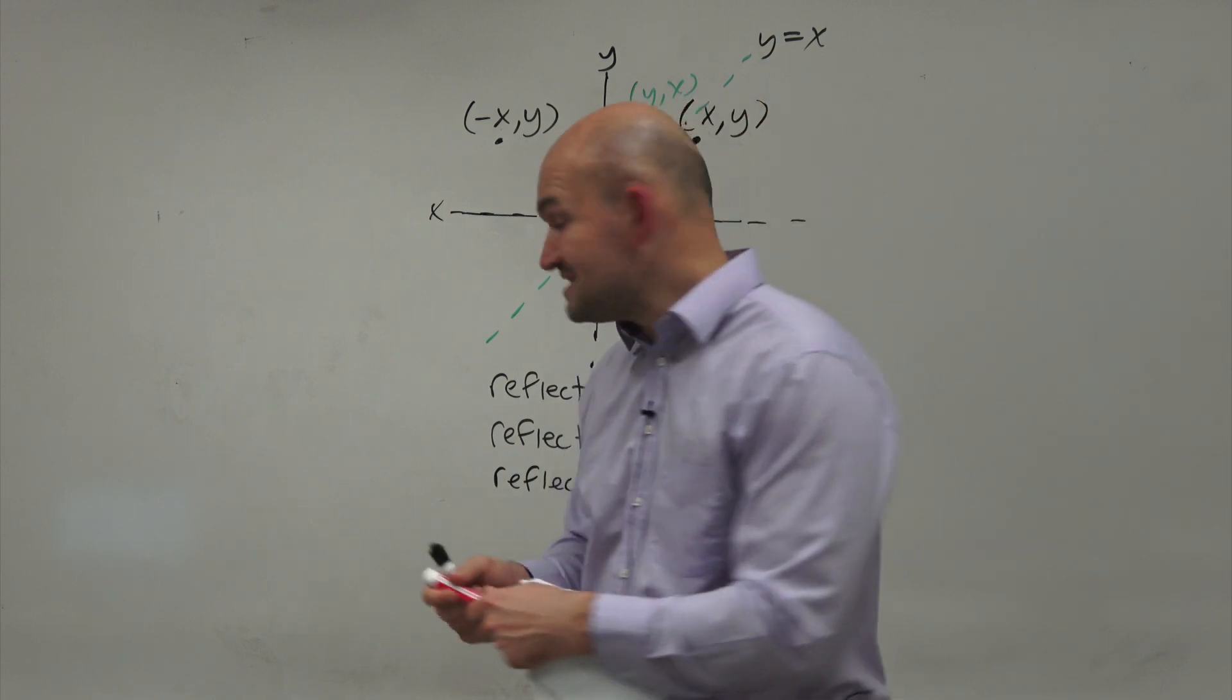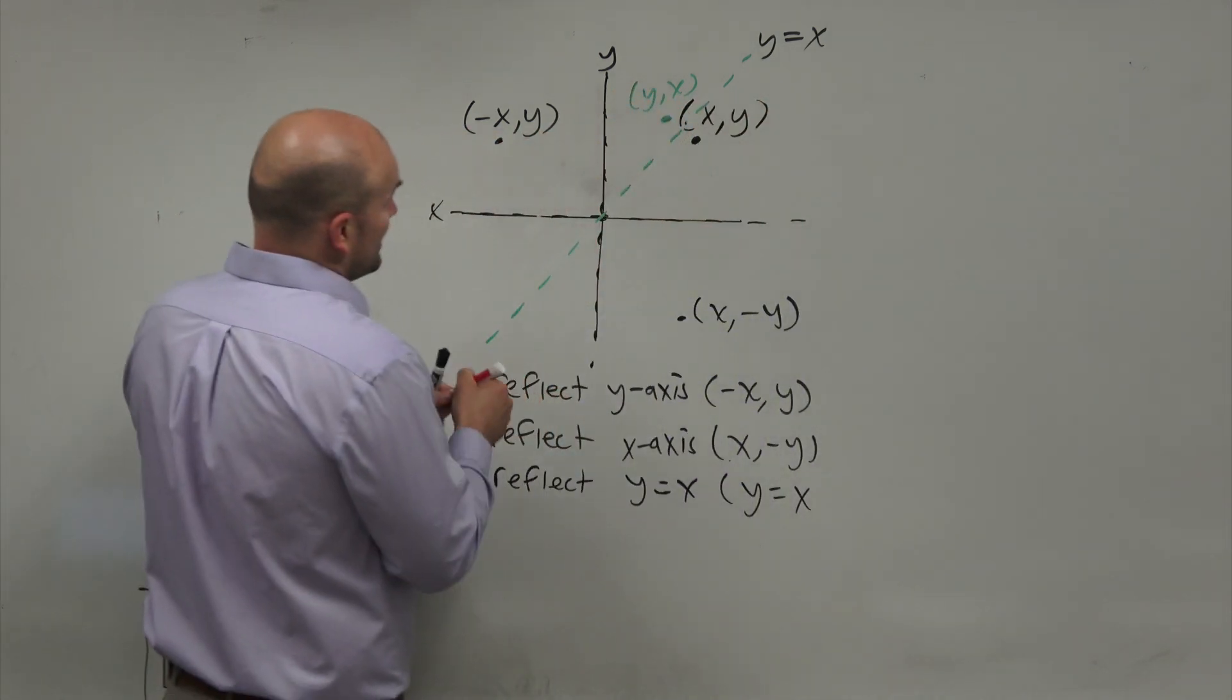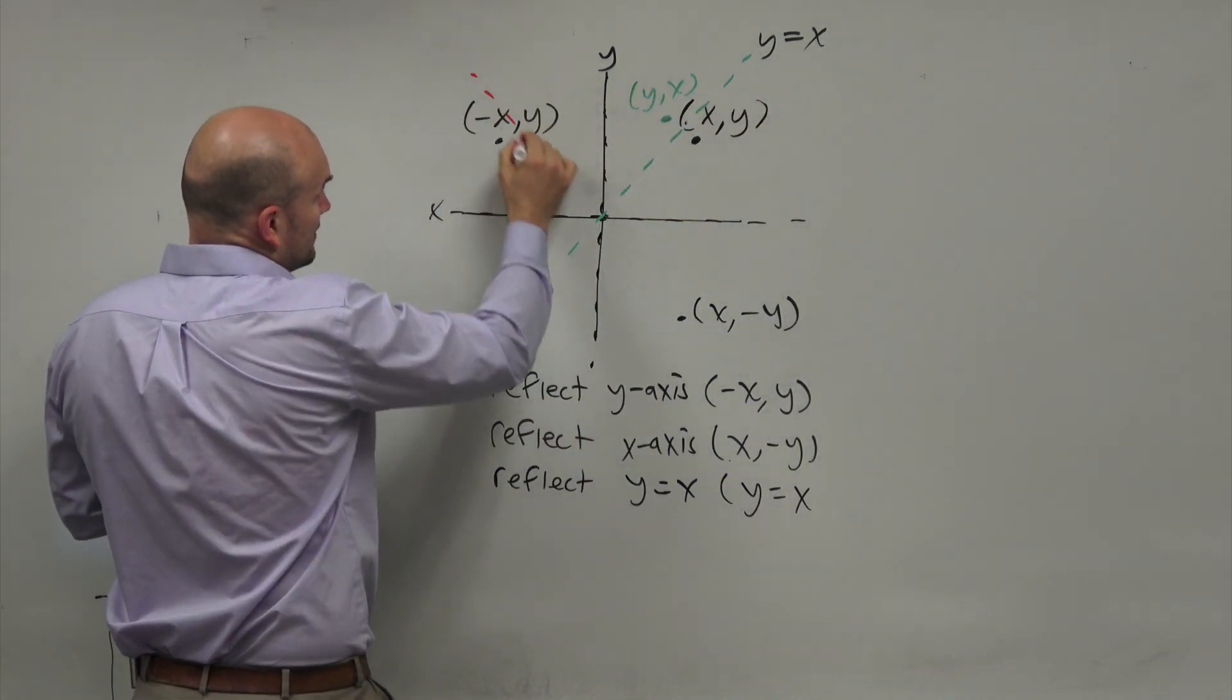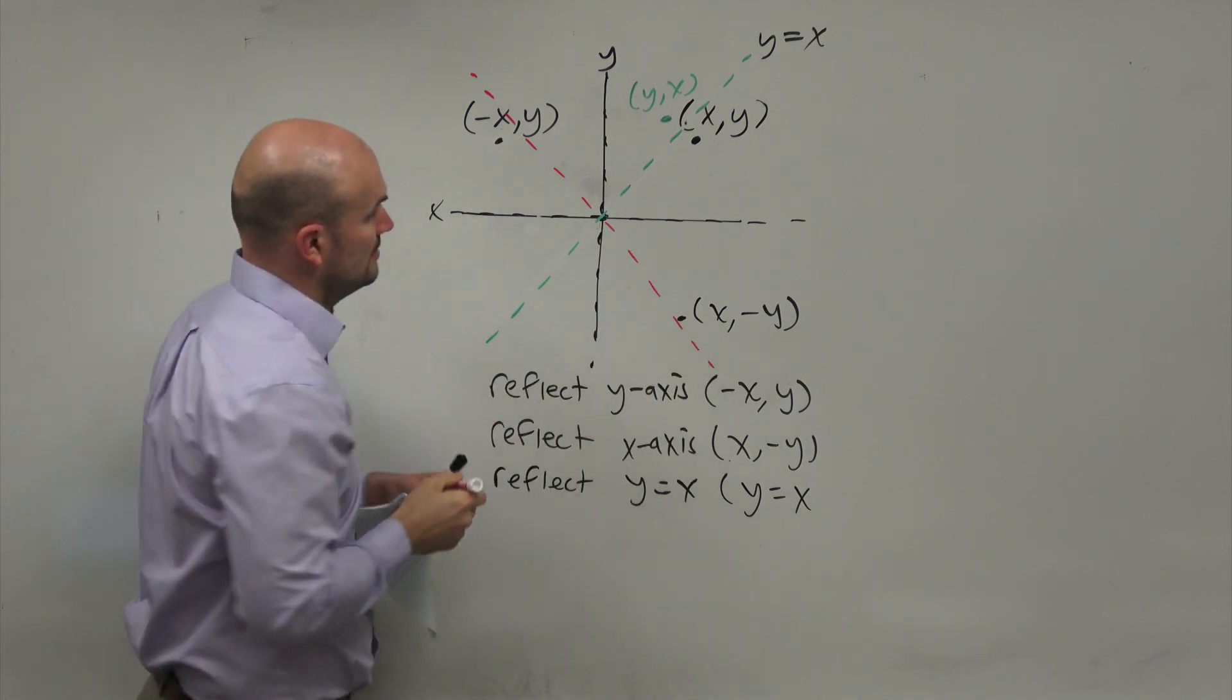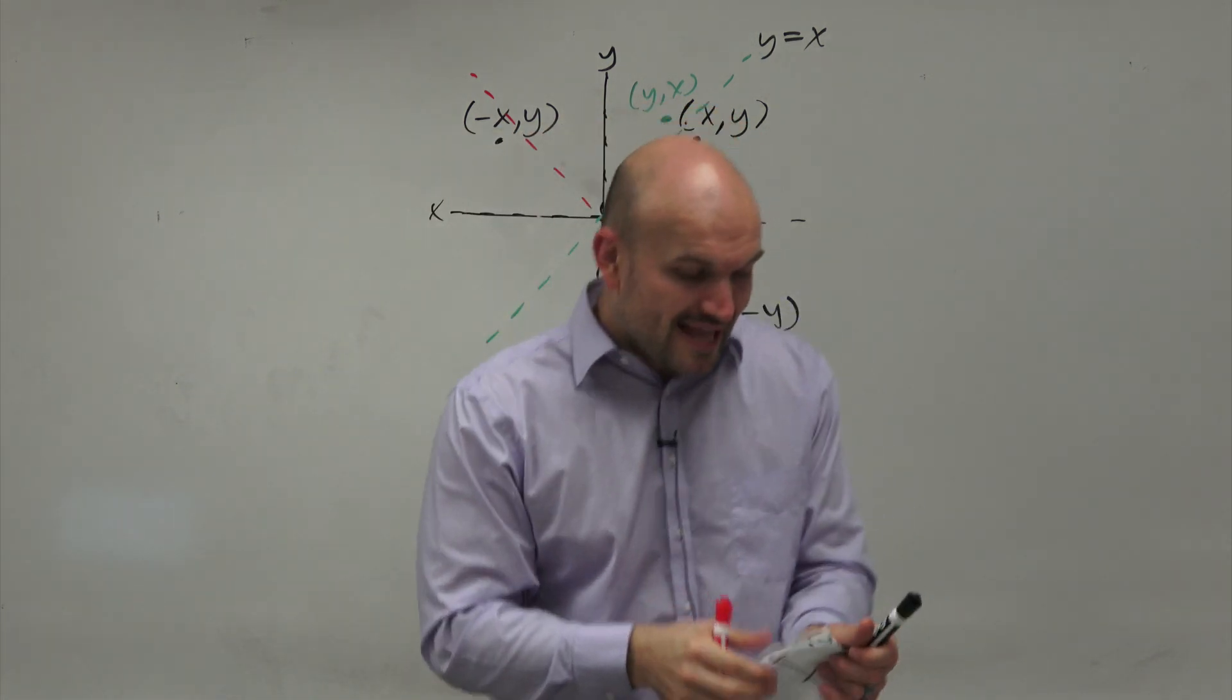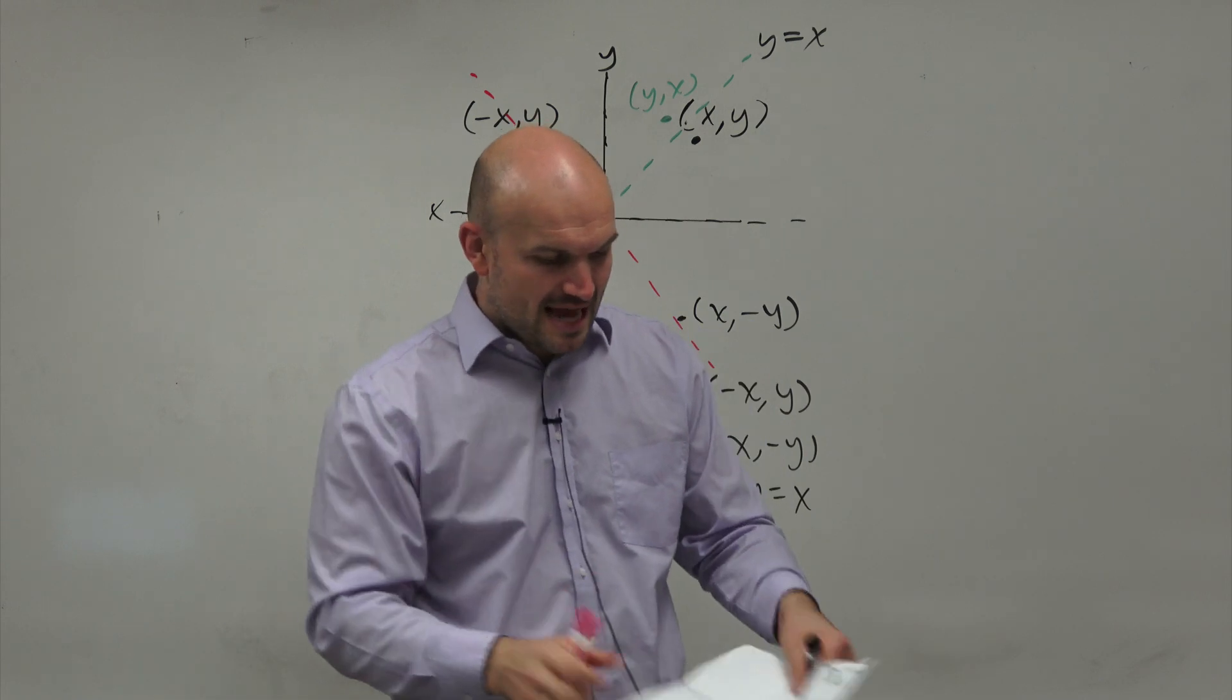Now, what about the Y equals negative X line? Well, that's going to be a line down here. So that's going to be a negative slope. So how are we going to do this? Well, again, think about it. Like, think about what's happening here.